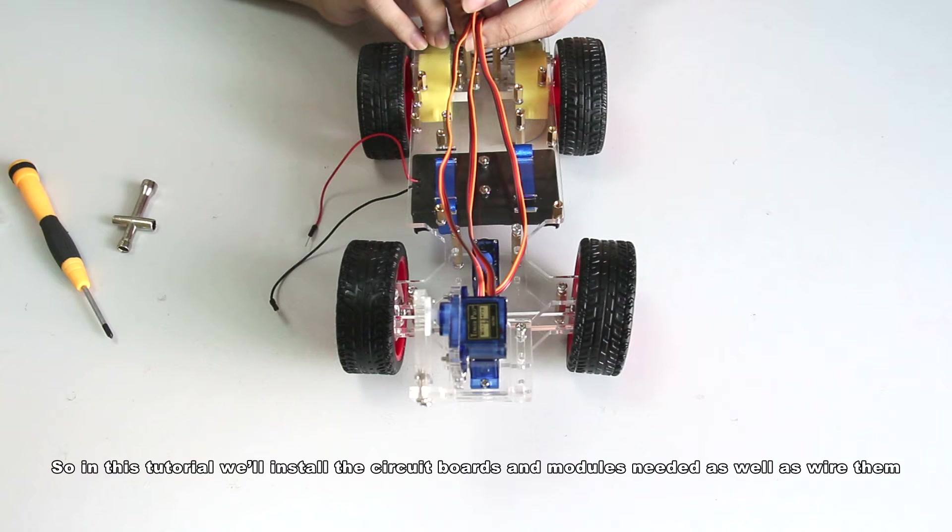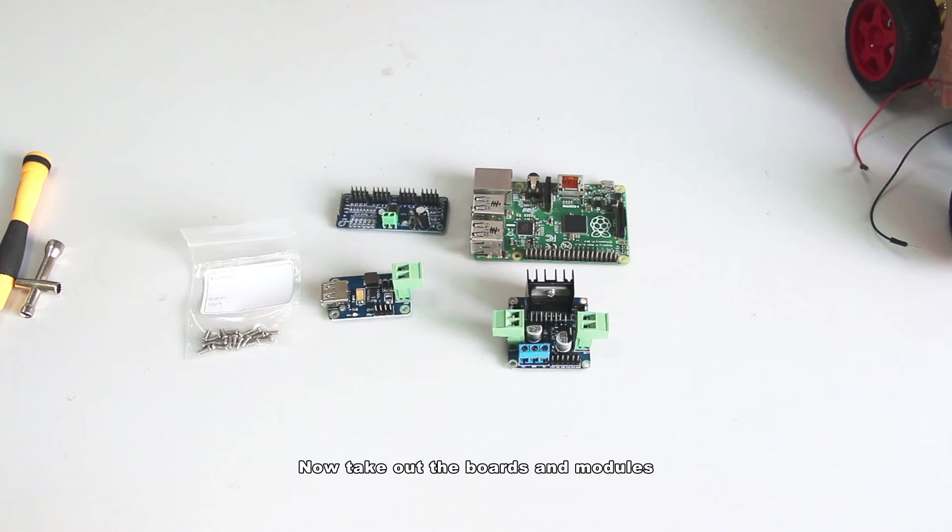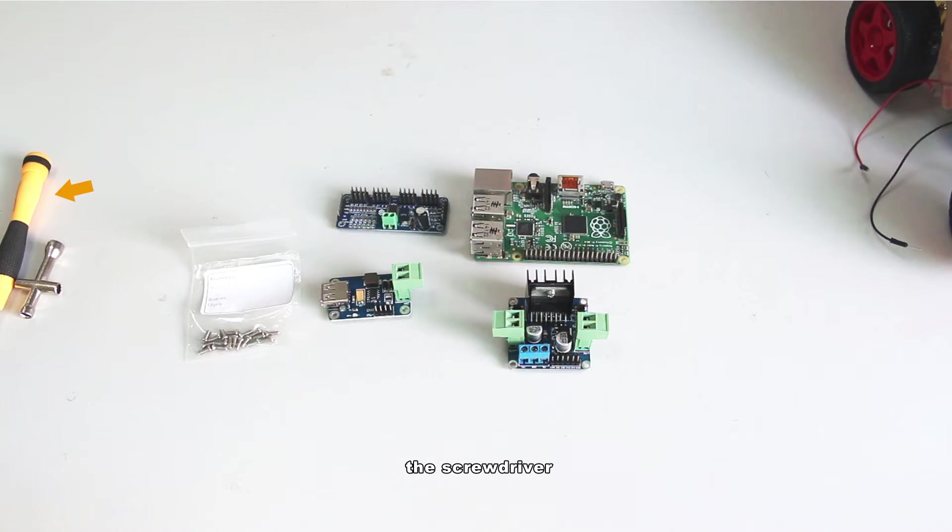So in this tutorial, we'll install the circuit boards and modules needed as well as wire them. Now take out the boards and modules. First the 16-channel PWM driver for servo control, then the step-down DC-DC converter module and L298N DC motor driver and the Raspberry Pi and the pack of M2.5x6 screws, the screwdriver and the cross-circuit wrench.